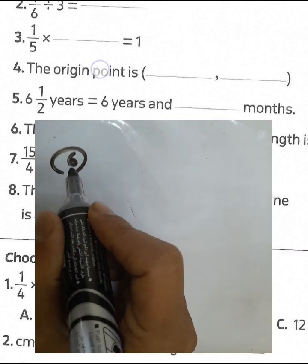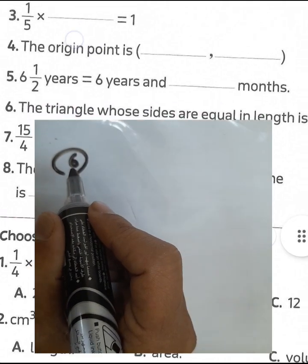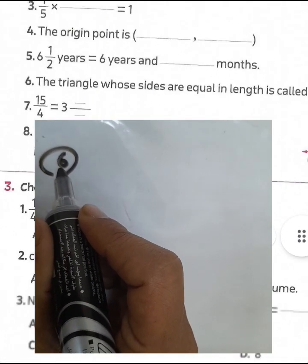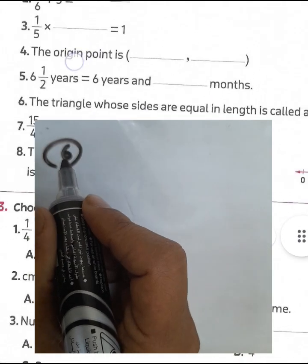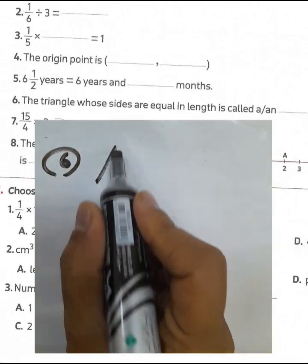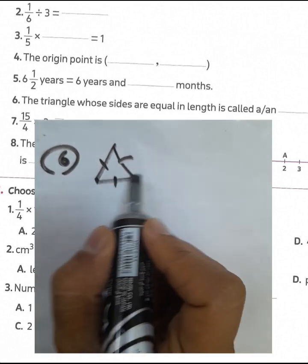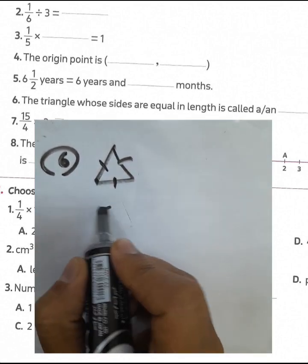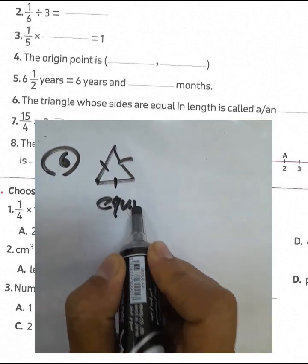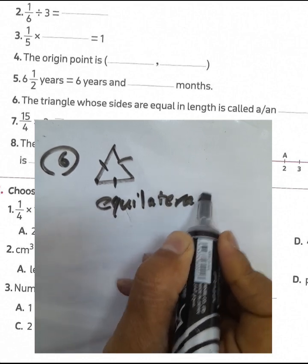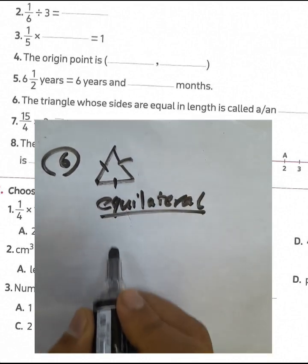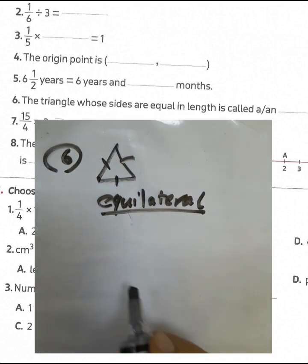Question 6: a triangle where all 3 sides are equal — we call it an equilateral triangle. If a triangle has 3 equal sides, we call it an equilateral triangle.